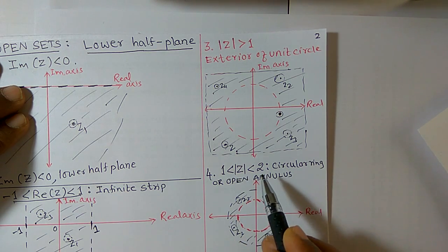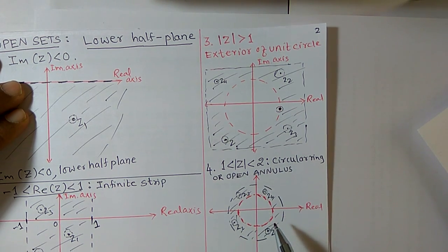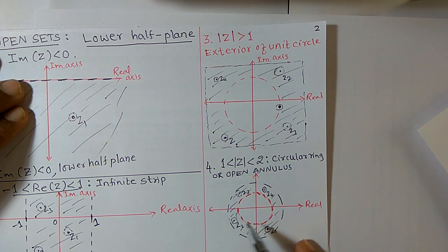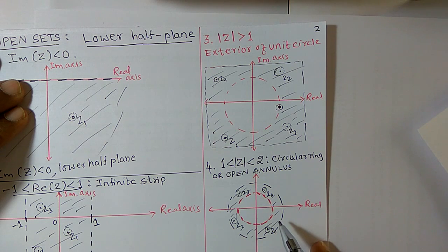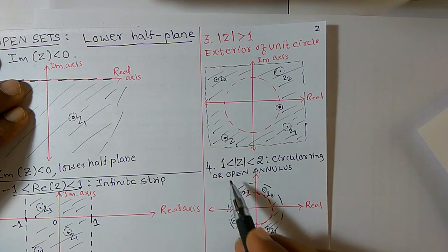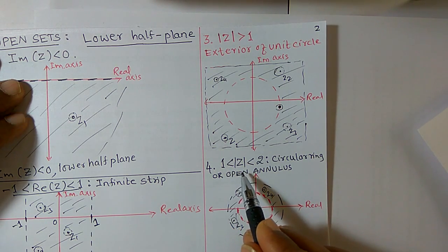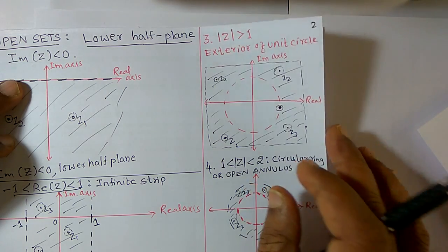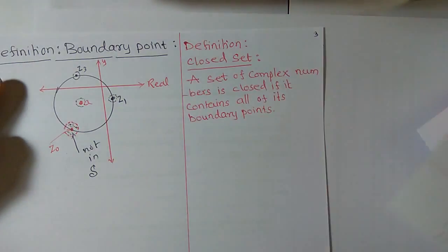Similarly, 1 is strictly less than mod z, which is strictly less than 2. This means you can consider two concentric circles: a circle with radius 1 and a circle with radius 2. In between these two circles, take any complex number — all those points belong to the region. Therefore, 1 < |z| < 2 is an example of an open set.